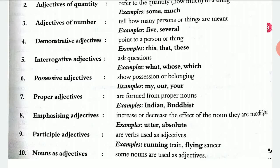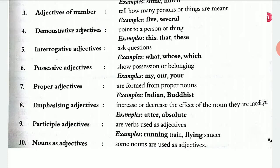Interrogative adjectives are formed from question words — all wh-words and 'how' — when they are used to ask questions. Then comes possessive adjectives, which show possession or belonging. For example, in 'This is my car,' the word 'my' is a possessive adjective referring to the noun 'car.' Other examples include my, our, and your.